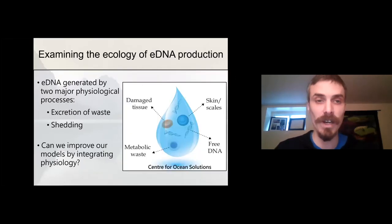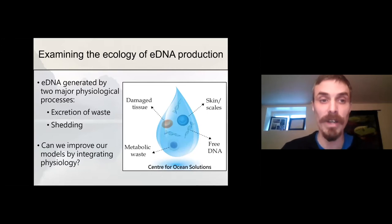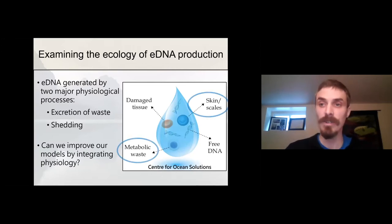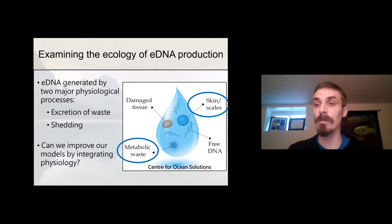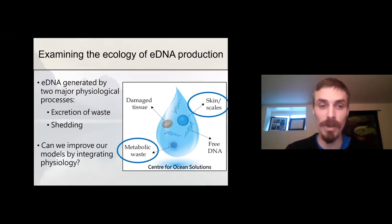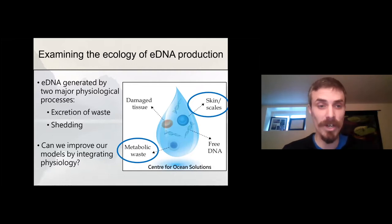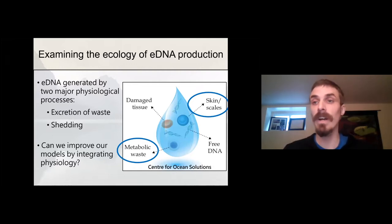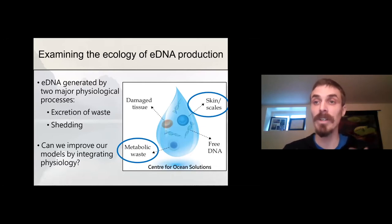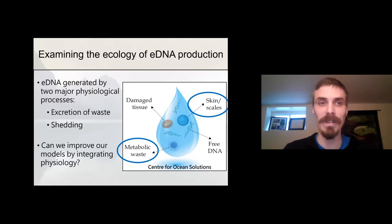eDNA is generated by two major physiological processes: the excretion of metabolic waste material and the shedding of cells from the surface of an organism — from its skin, scales, and mucus. I was fundamentally interested in the question: can we improve our models by integrating the physiology of eDNA production into our estimates of organism abundance?